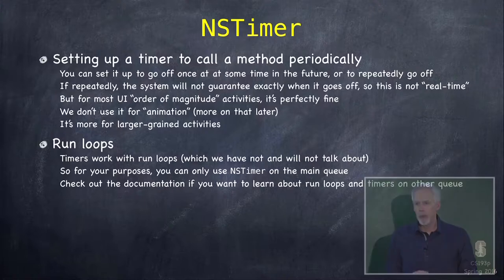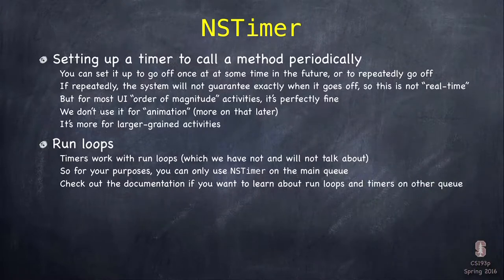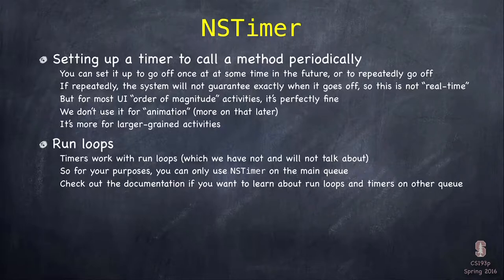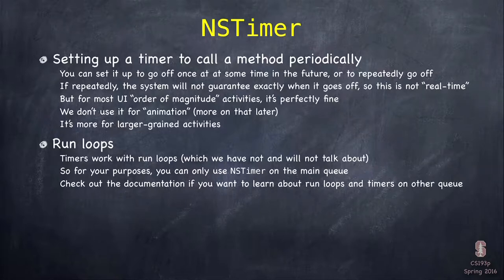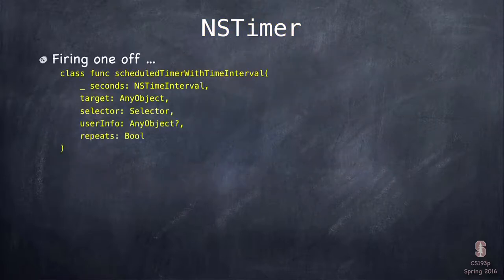The timer is built on a mechanism in iOS called run loops, which I'm not going to talk about in this class. For the main queue, there's a run loop set up for you, so NSTimer always works on the main queue. For other queues, you may need to set up your own run loop. For the purposes of this class, just assume NSTimer is a main queue thing. When the timer fires, you could dispatch async to another queue — that's fine.